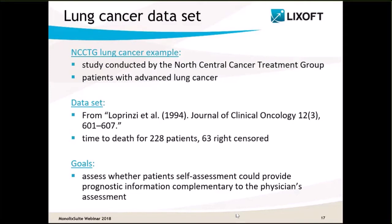A few words on this dataset: it comes from a study conducted by the North Central Cancer Treatment Group. The time to death has been recorded on 228 patients with advanced lung cancer. Among them, 63 are right-censored, meaning their time of death is not known because they left the study at some point. The goal of the study was to assess whether a patient's self-assessment could also provide prognostic information complementary to the physician's assessment.